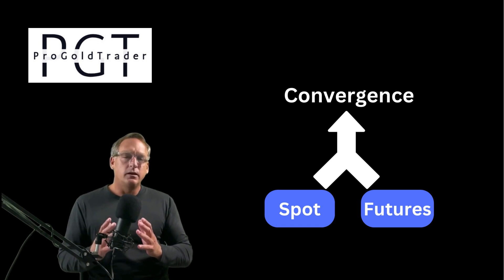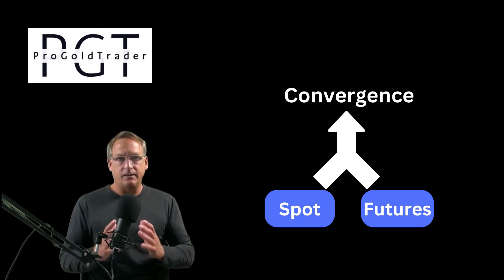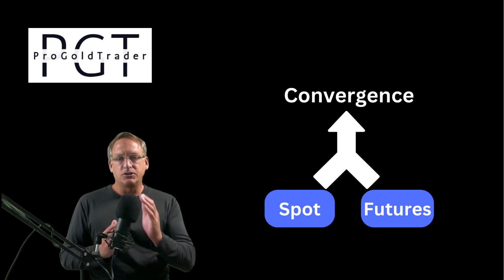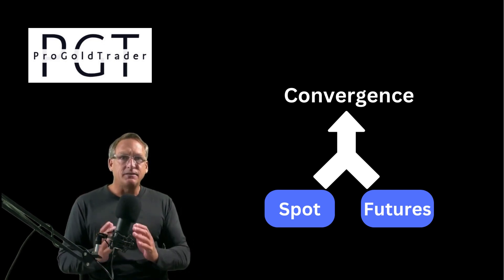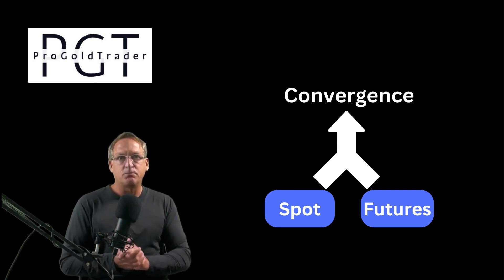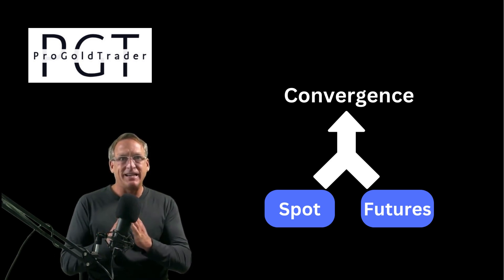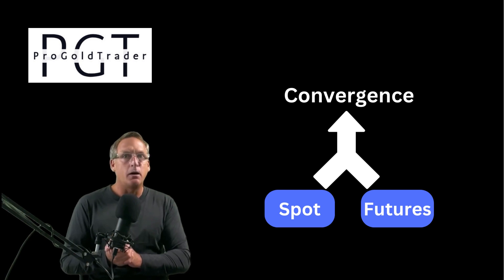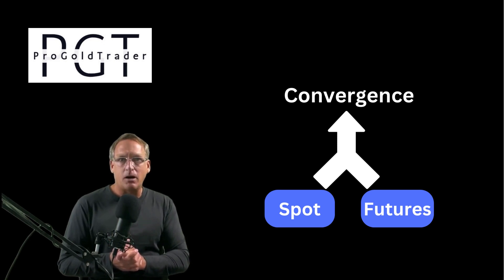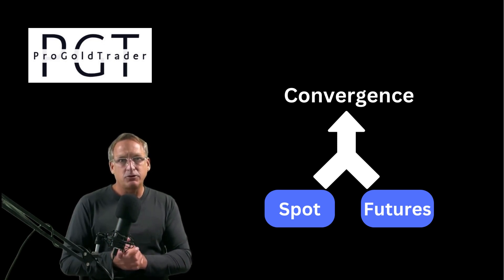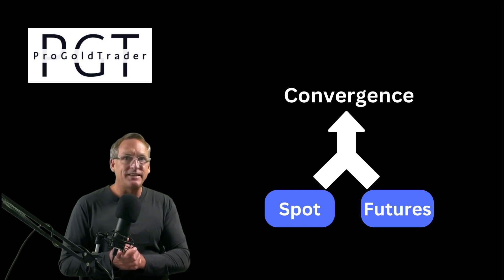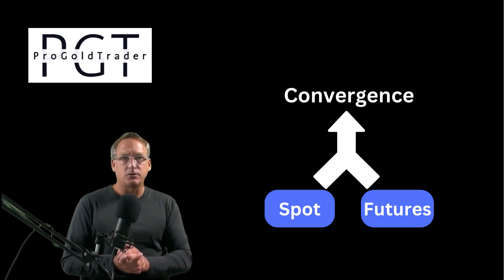This is a really important concept all gold investors should learn: how the spot price will converge to the futures price. Spot price and futures price convergence is the process by which the spot price of a commodity and the futures price of the same commodity converge as the delivery date of the futures contract approaches. The spot price is what a commodity can be bought or sold for immediately; the futures price is what it's agreed to be bought or sold for at a specific future date.